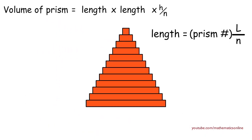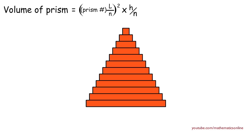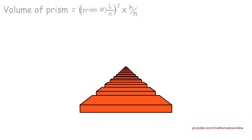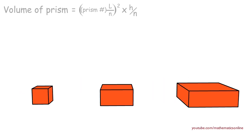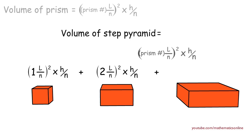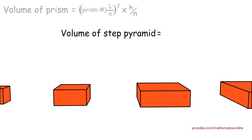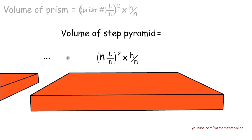The volume of each rectangular prism becomes equal to (prism number × l/n) times (prism number × l/n) times h/n, which simplifies to (prism number × l/n)² times h/n. To find the volume of the step pyramid, we calculate and add together the volumes of all rectangular prisms: (1 × l/n)² × h/n + (2 × l/n)² × h/n + (3 × l/n)² × h/n, continuing up until the last prism with volume (n × l/n)² × h/n.